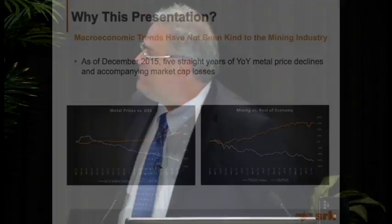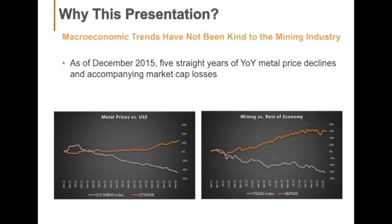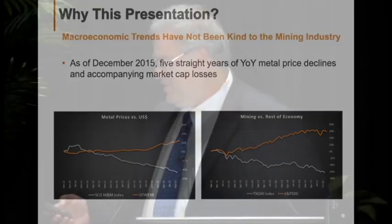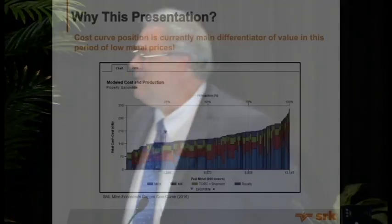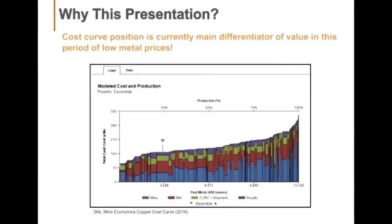So why this presentation? Well, we've seen variations of this graph quite often during this conference and others, but let's just say the last five years have not been very kind to this industry. You've got the S&P 500 up here, Toronto Global Index down there. So what this means in a period of low metal prices and low market caps is that cost differentiation is the main driver for companies trying to attract interest for investment.